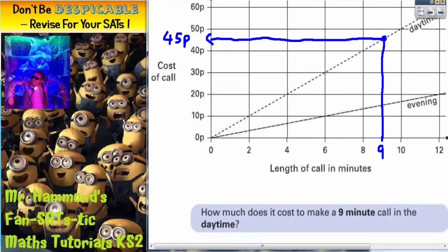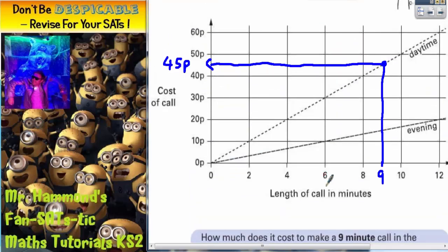Now there are two ways of doing this. We're interested in 6 minutes, we're interested in this number here. Well, the evening cost is there which is, if we read across, 10 pence, and the daytime call if we read across there is level with 30 pence.